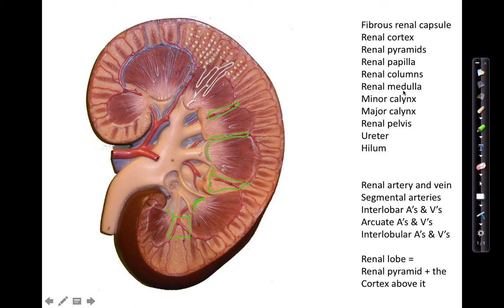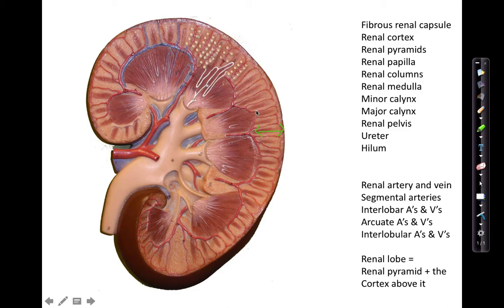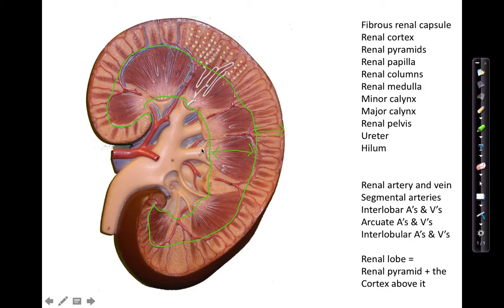The renal medulla is deep to the cortex. It includes both the renal pyramids and the renal columns. So the medulla is the region deep to the cortex but before we get to the inner collecting structures — it encompasses the pyramids and the columns between them.